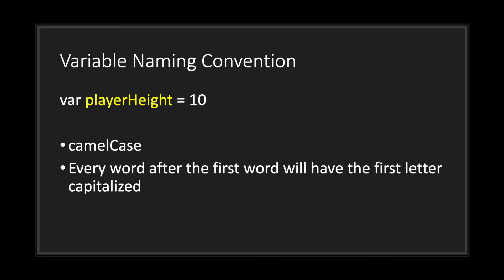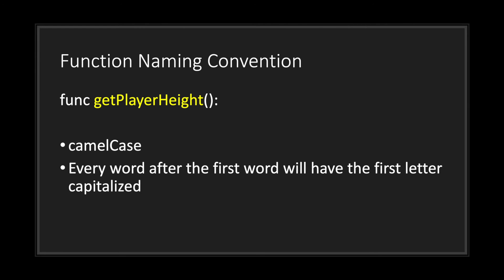As an example of camelCase, let's take a look at playerHeight. PlayerHeight is camelCase — every word after the first word will have its first letter capitalized. In this case, we have a lowercase 'p' but an uppercase 'H'. I like to use the camelCase naming convention for functions as well, where we have a lowercase first letter and capitals on subsequent words.